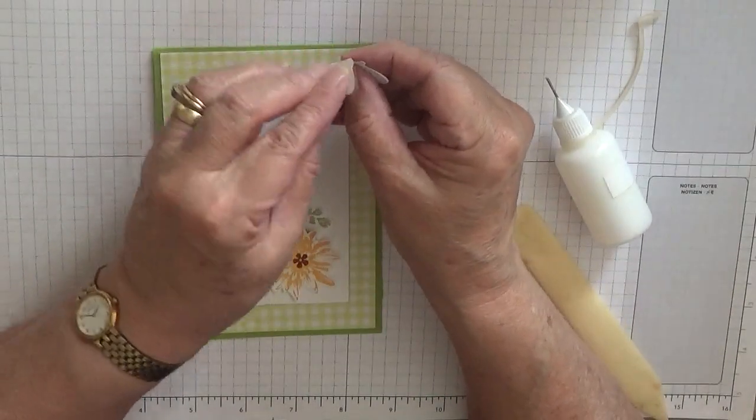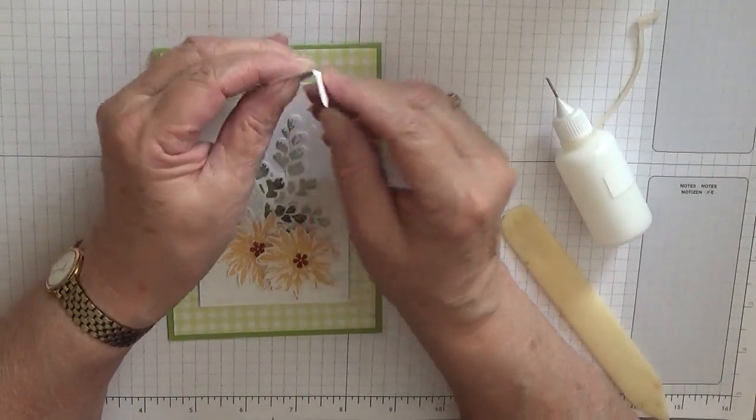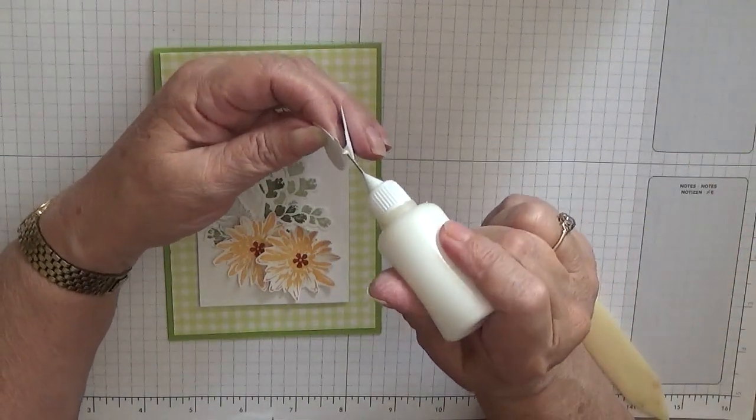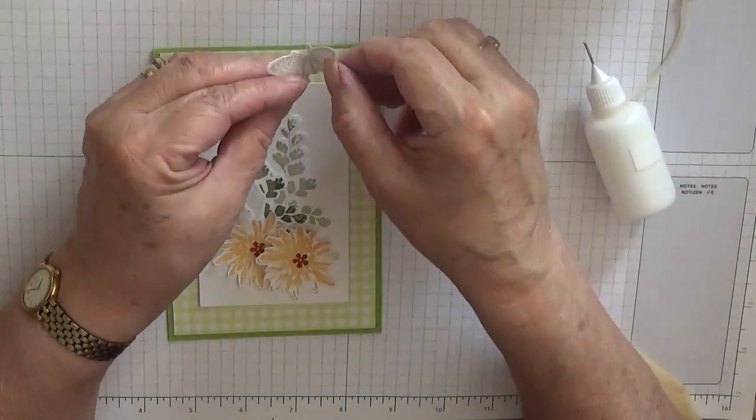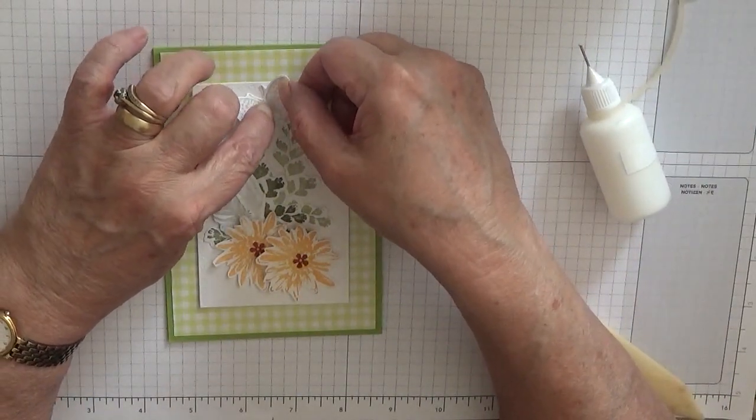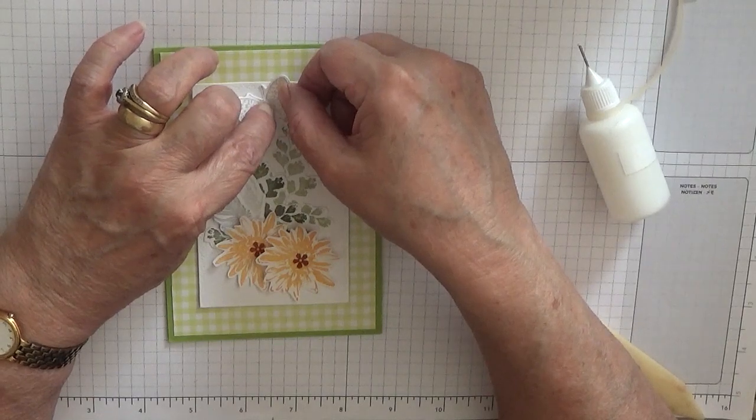And my butterfly, I just pull its wings up, like I always do on my butterflies, and put that down between the greenery.